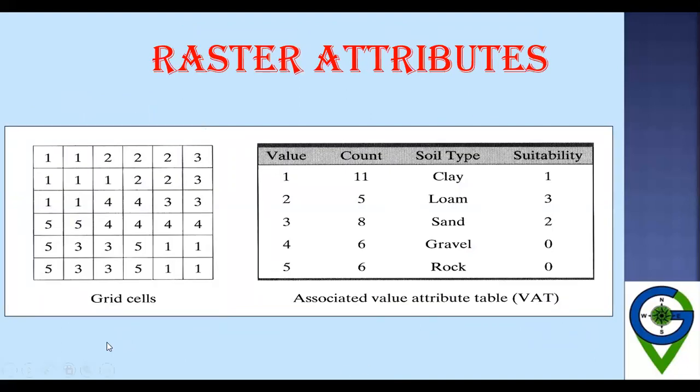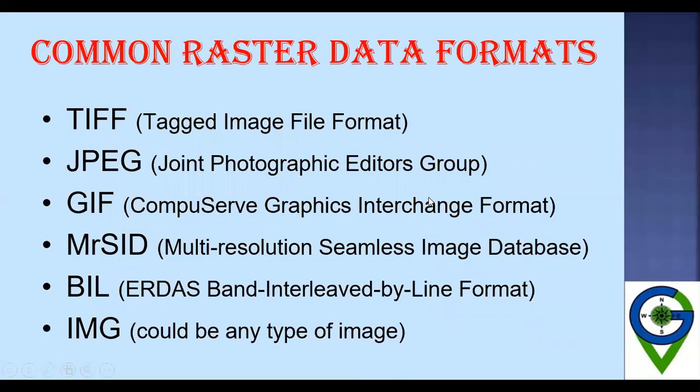This is how grids and their values look in raster attributes. Some common raster data formats include TIFF (Tagged Image File Format), JPEG (Joint Photographic Experts Group), GIF (CompuServe Graphic Interchange Format), MrSID (Multi-Resolution Seamless Image Database), BIL (Band Interleaved by Line Format), and IMG — any type of image file. These are the common raster data formats.